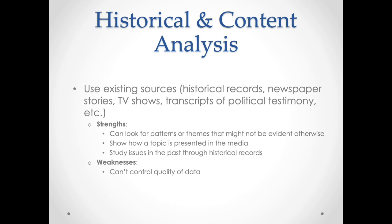The problem of selection doesn't just exist for historical and content analysis — it exists for all kinds of research. When survey researchers do surveys, some people choose not to participate, and when they select out of participation there are things we don't learn. For participant observation, if you're living in a community, some people may avoid you. They're given the right of informed consent — they know they don't have to participate — and so people are selected out of research. Historical selection is a problem, but it's not a unique problem; it's one we need to be deeply sensitive to across all methods.